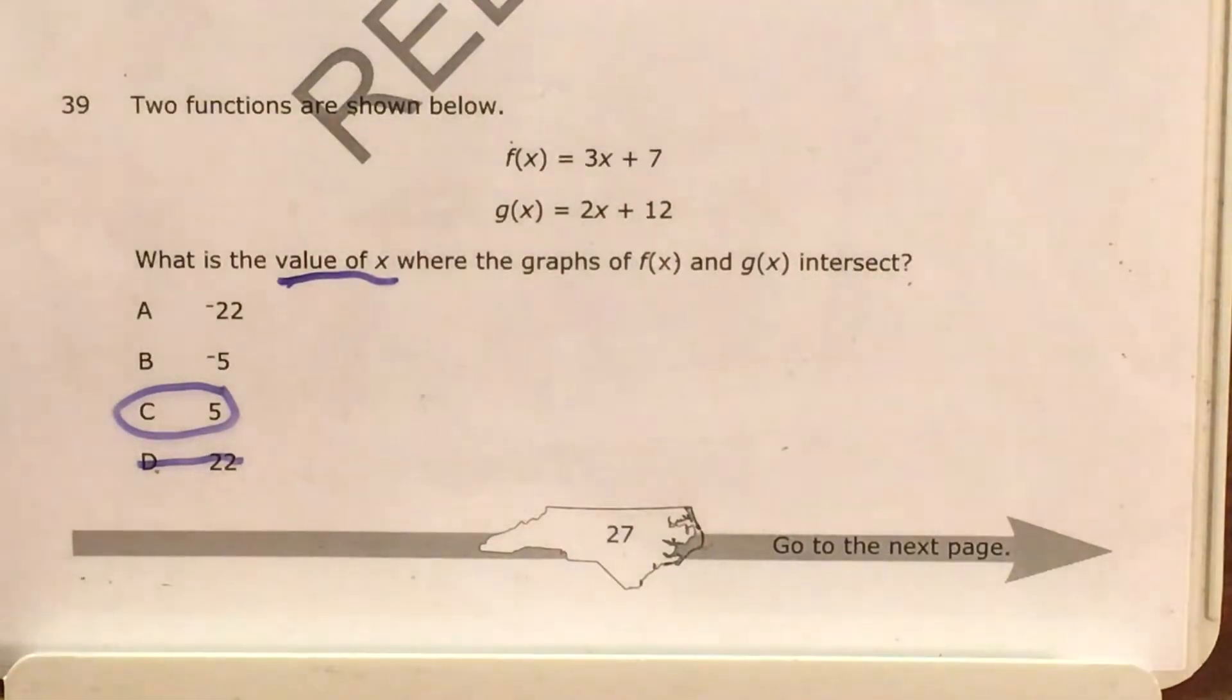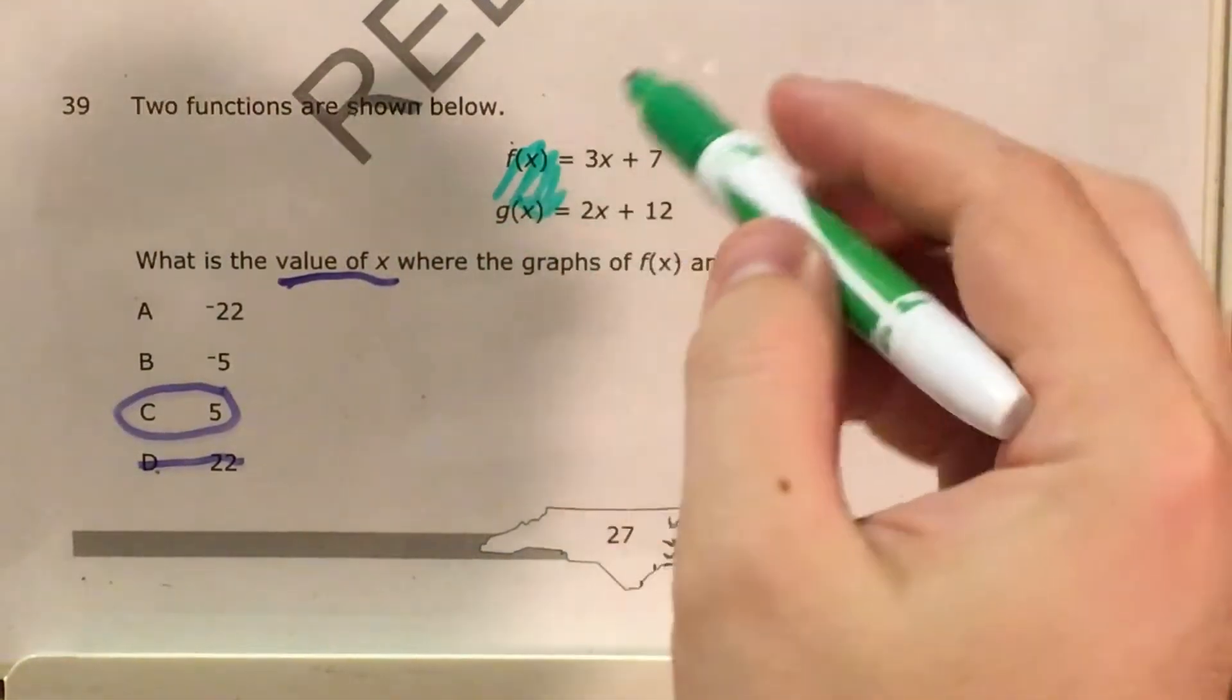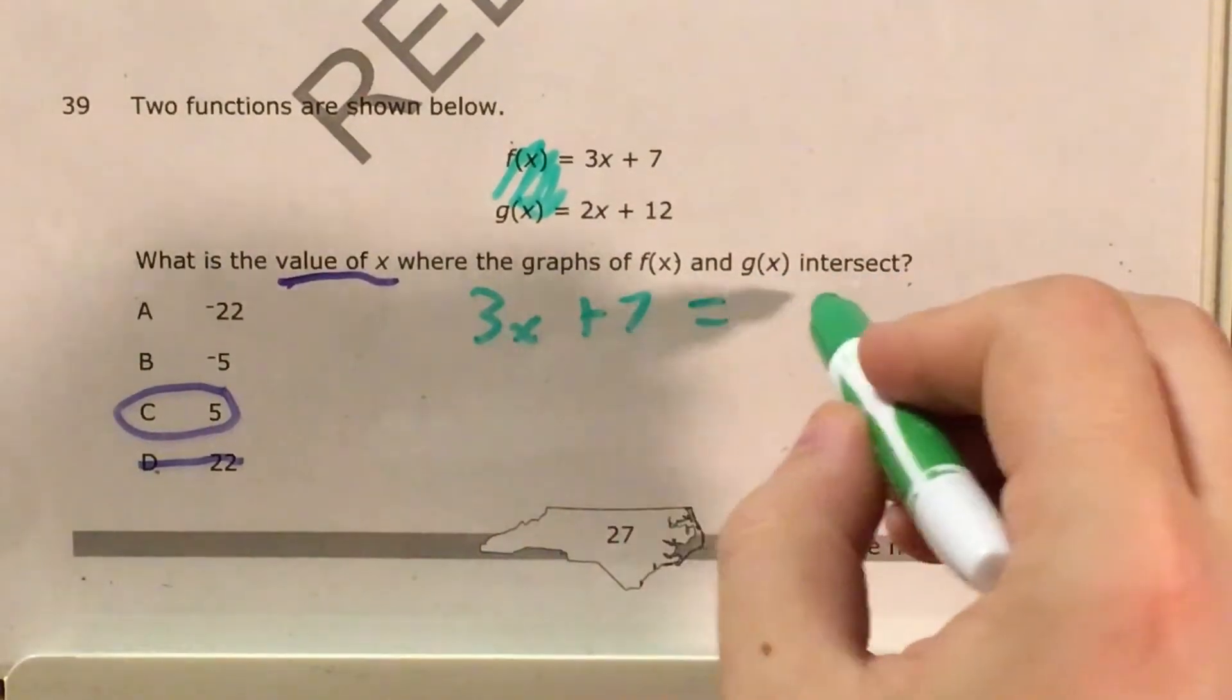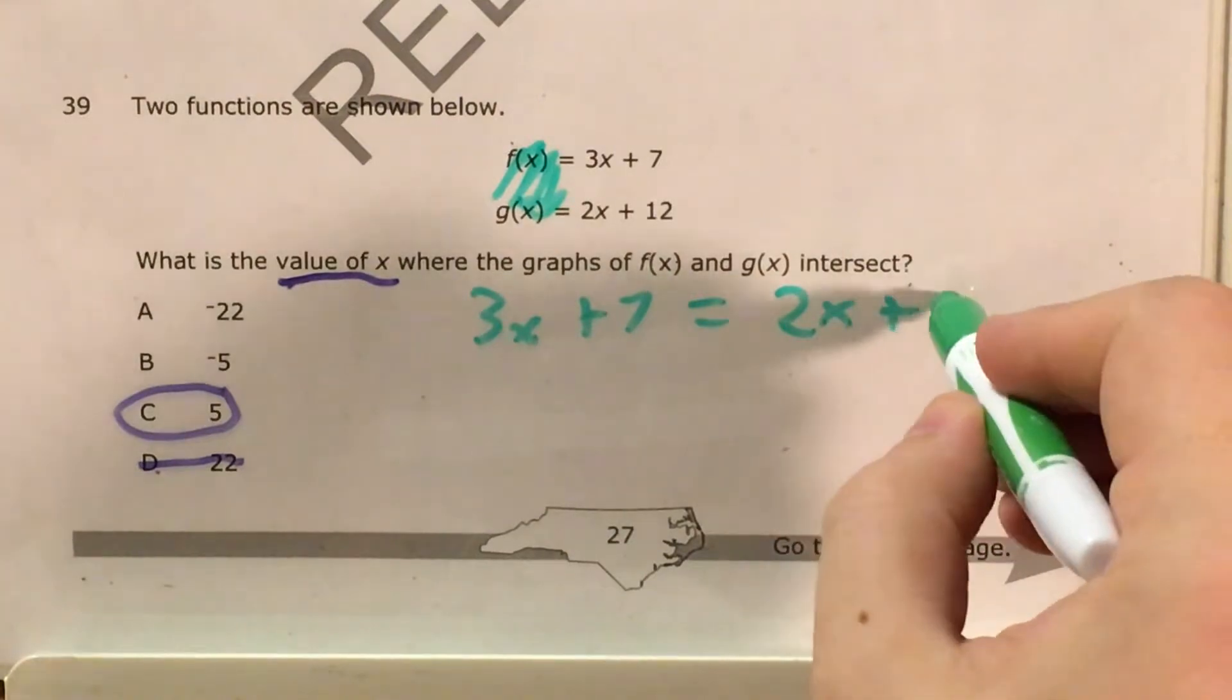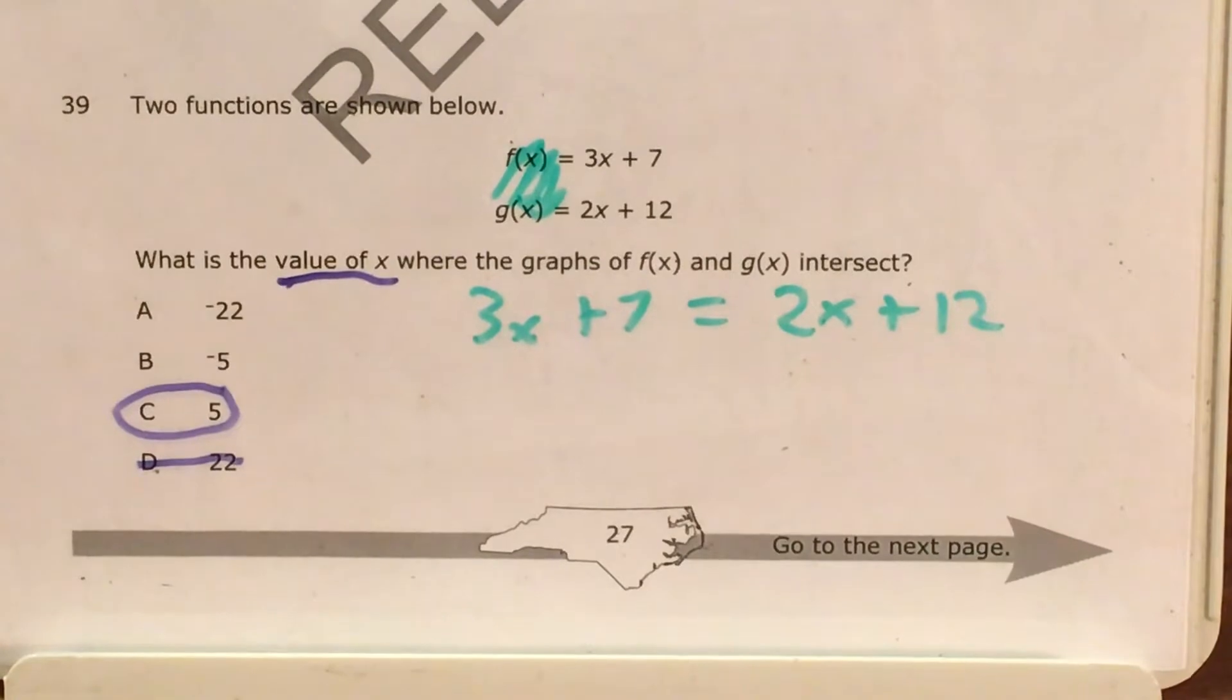But I am going to solve this the other way. And the other way is to treat this like an equation with variables on both sides and just set it up as 3x plus 7 equals 2x plus 12. Because I'm still solving for x, it's still going to give me a value of x. So this is a perfectly valid mathematical way of doing this.